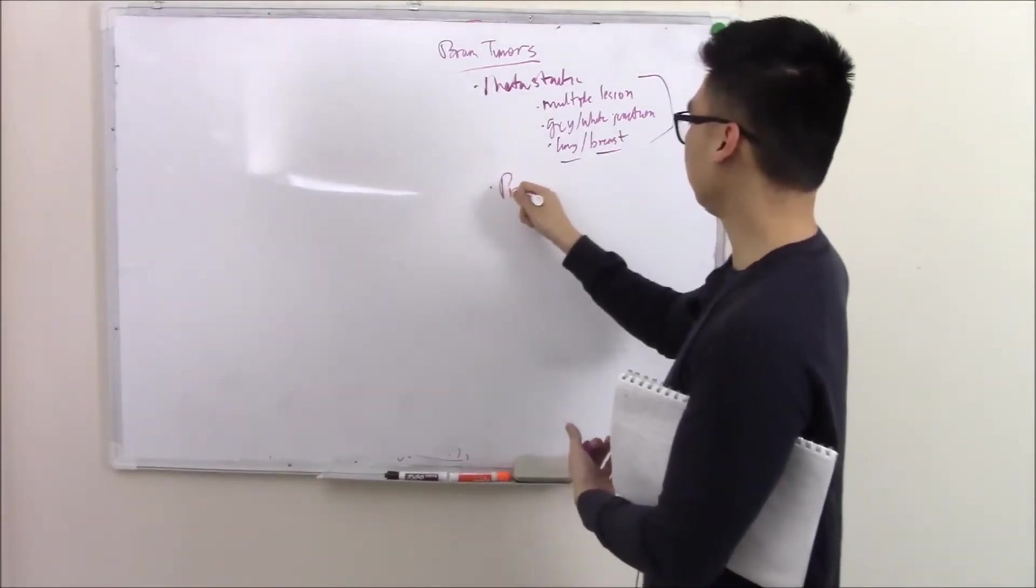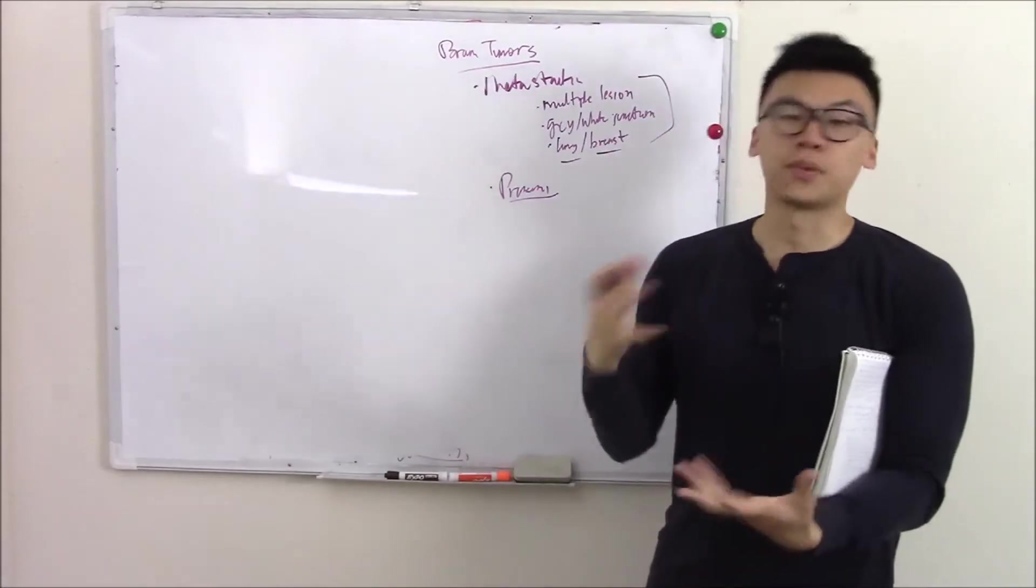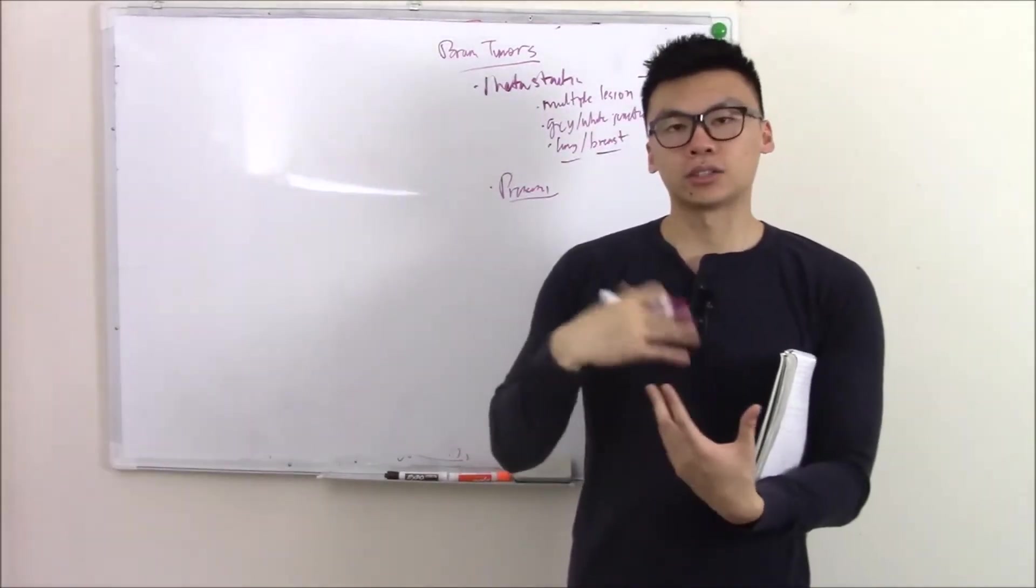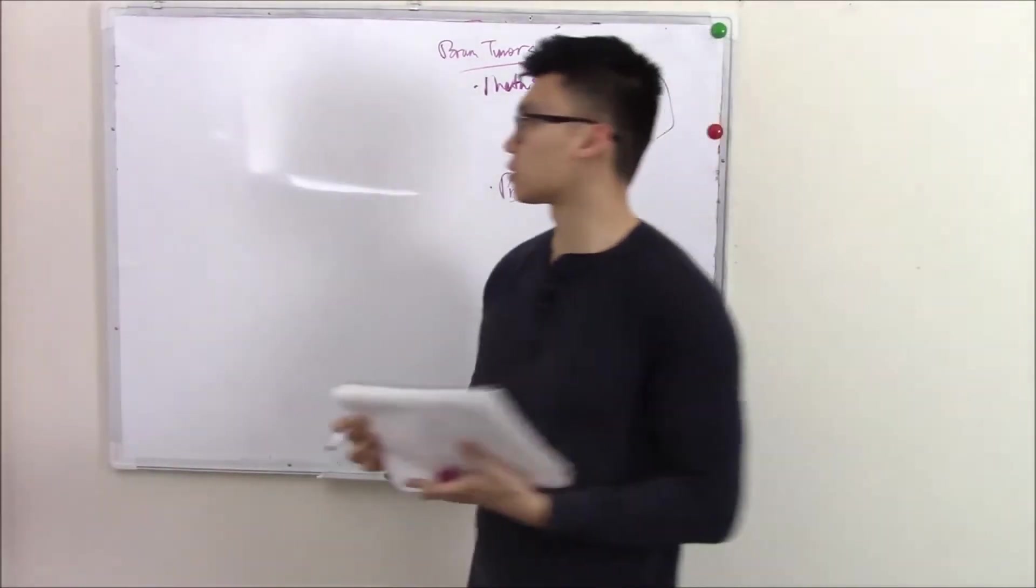So that's metastatic. What's your primary? Your primary tumors depend on your age. So different age gives you different primary tumors. We're going to break it down into adult tumors and childhood tumors of the brain.